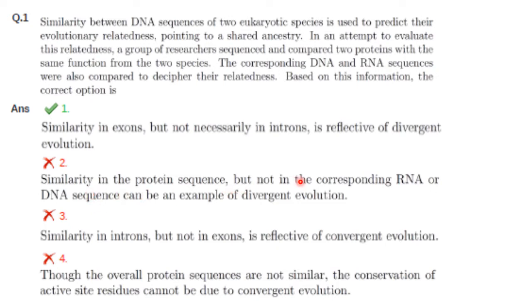Regarding option 2: if there is similarity in protein sequence, there should also be similarity in corresponding RNA and DNA sequence for divergent evolution. So the statement that similarity in protein sequence but not in RNA or DNA can be an example of divergent evolution is wrong. Option 2 is incorrect.